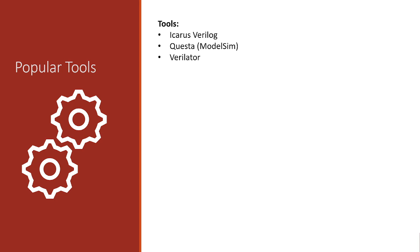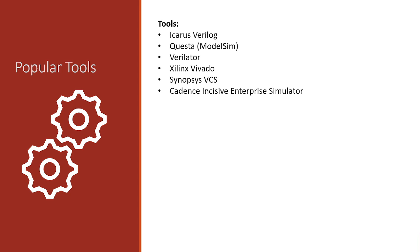Verilator is an open source tool that can compile and translate Verilog or SystemVerilog code into C++ or SystemC code. I plan on doing a future course covering this tool, but in this course we're just focused on the Verilog fundamentals. Xilinx Vivado is AMD's complete design suite for FPGA and ASIC design. I have no experience with this tool, but feel free to check it out if you're interested. Also widely used in the industry is Synopsys VCS and Cadence Incisive Enterprise Simulator. I have no experience with either of these, but if you have access to them and prefer them, feel free to use those for these demos.